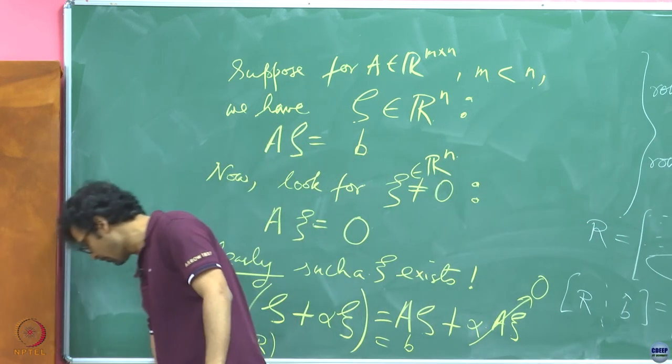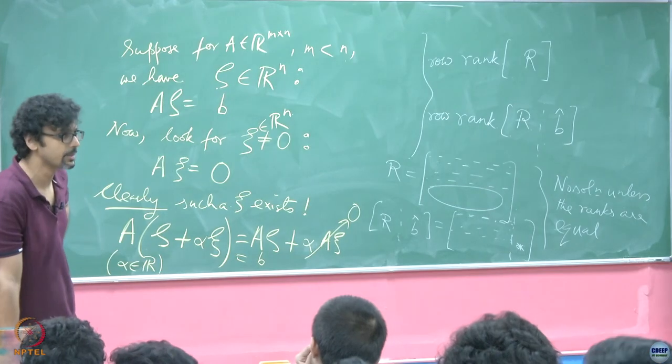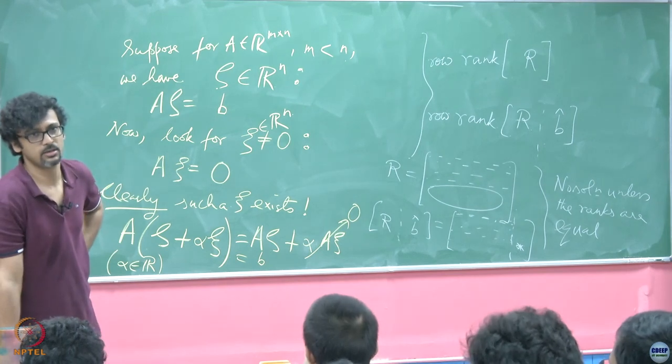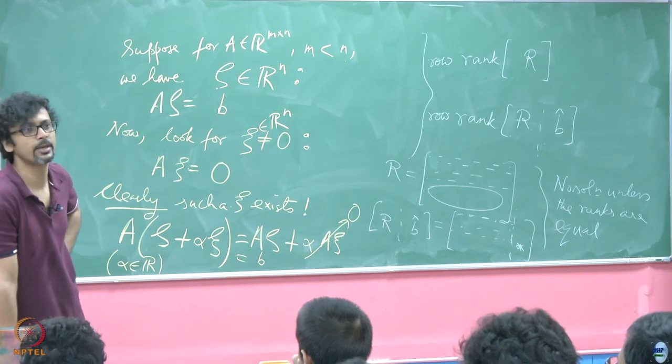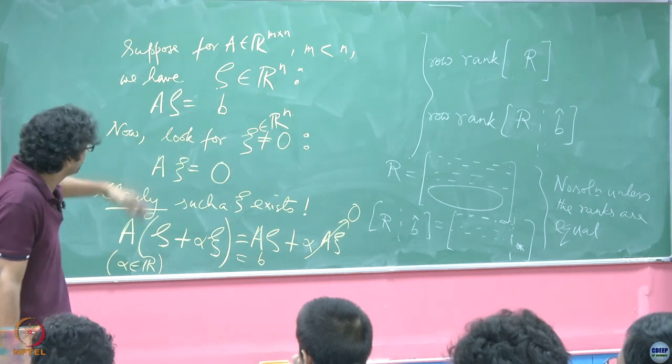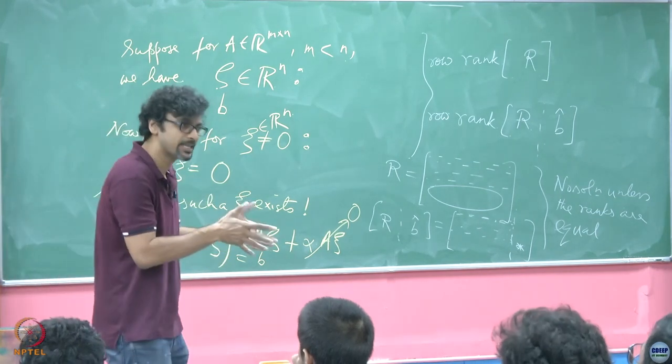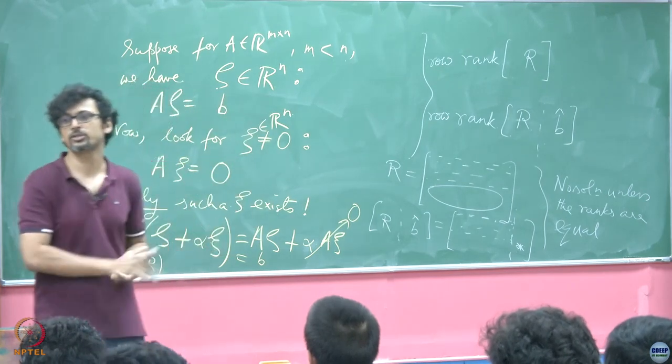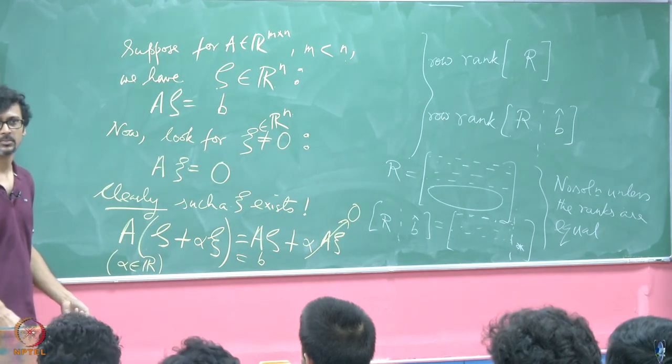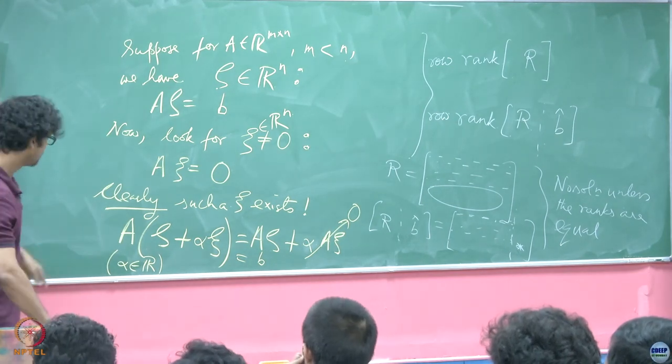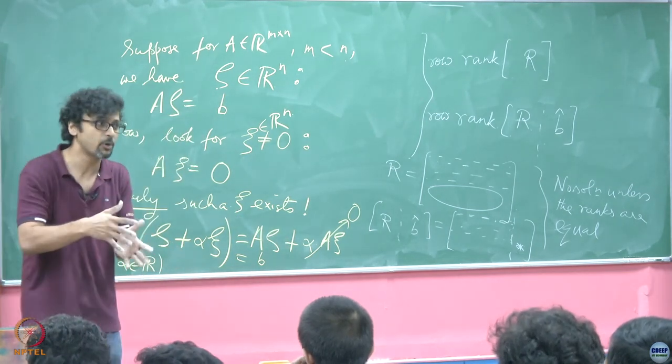That is not necessarily bad because often times when you conduct fewer experiments than the number of variables you want to determine, maybe the cost of the experiment is prohibitive. You want to determine, say, a million parameters by performing a hundred experiments. So you will come up with probably a hundred equations in a million parameters.